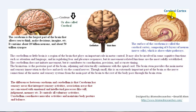Talking about the differences between the cerebrum and the cerebellum: the cerebrum has sensory areas that interpret sensory activities, and association areas concerned with emotional and intellectual processes such as judgment and memory. It controls all voluntary activities. On the other hand, the cerebellum coordinates muscular activities and maintains body posture and balance.